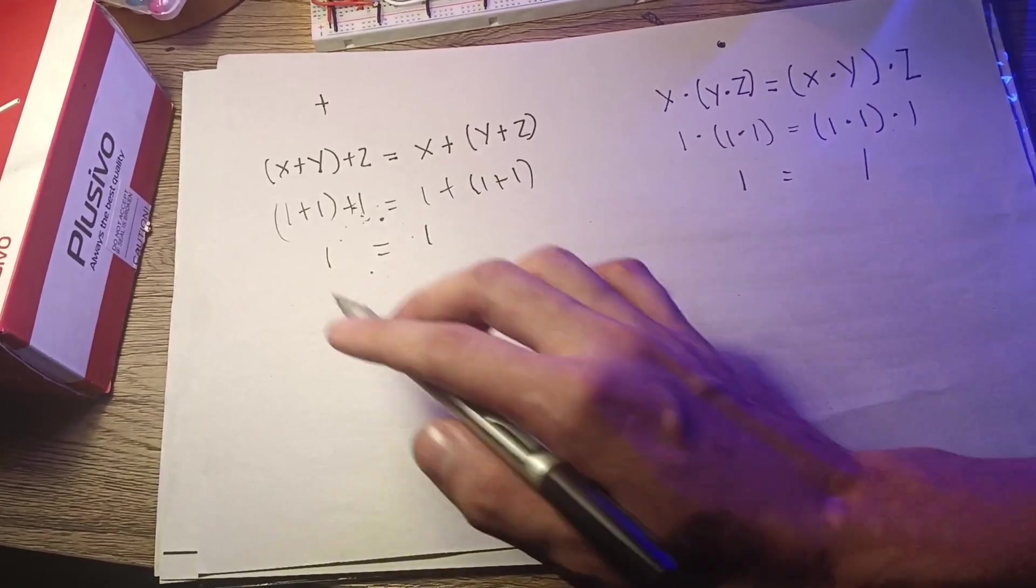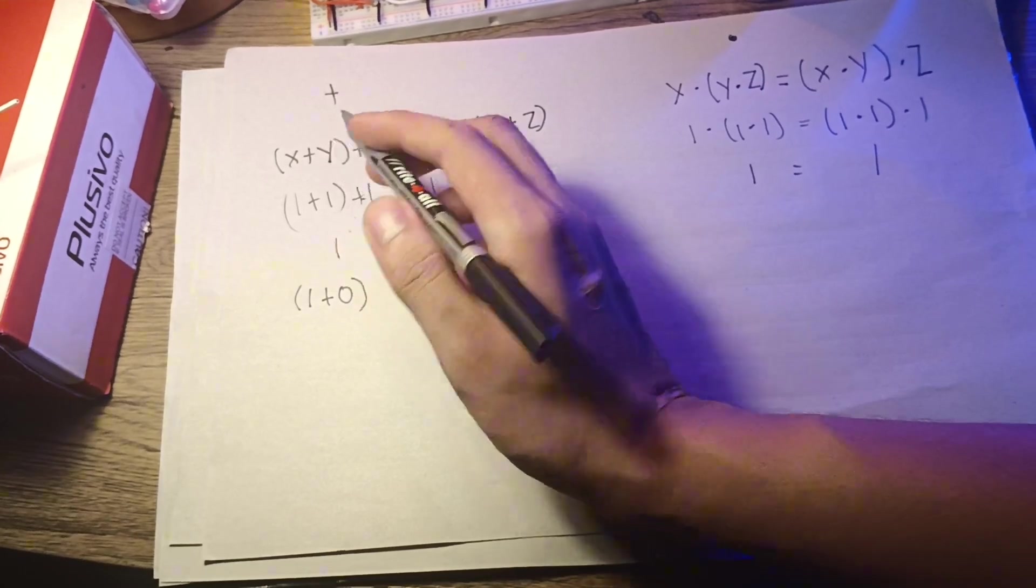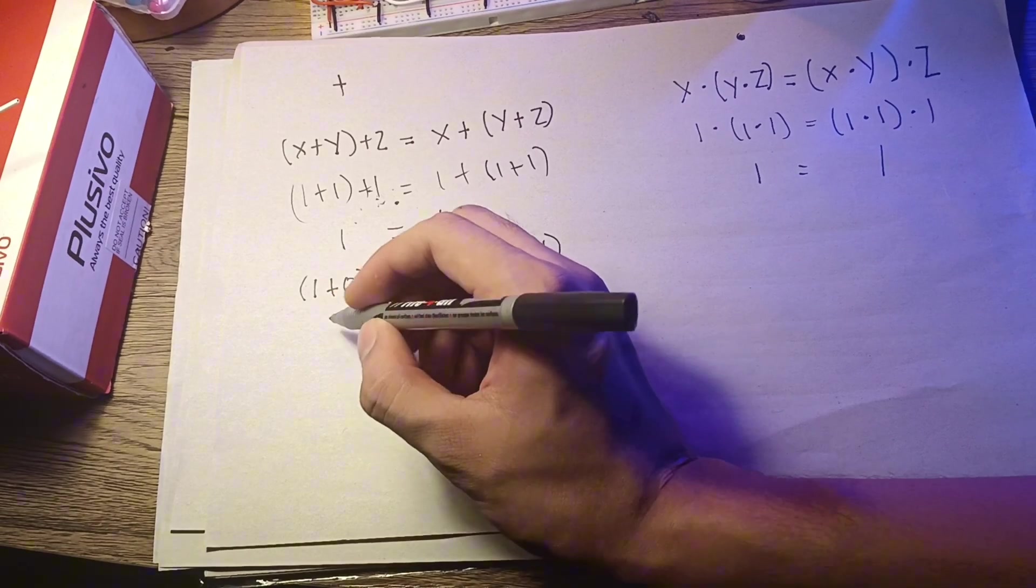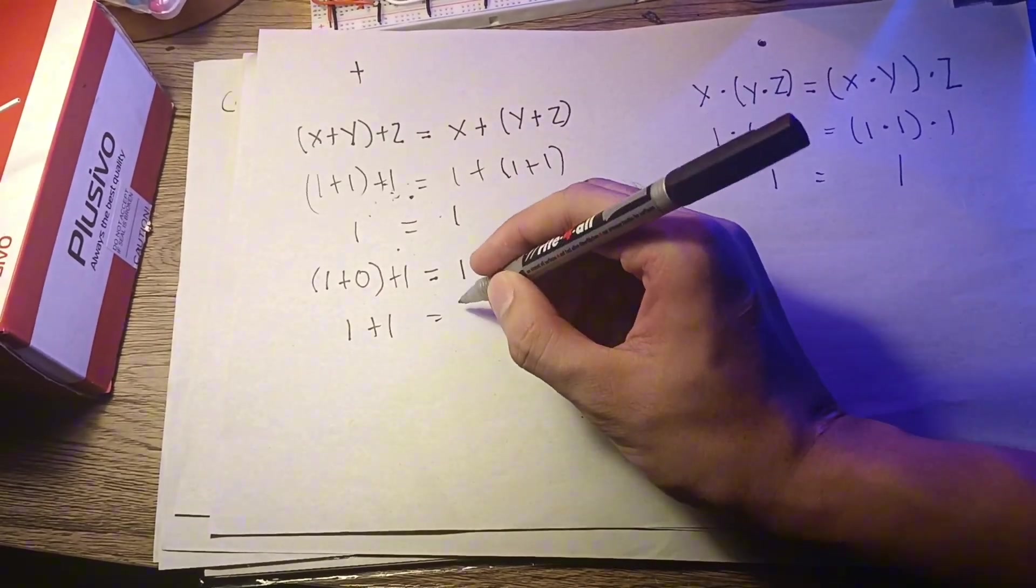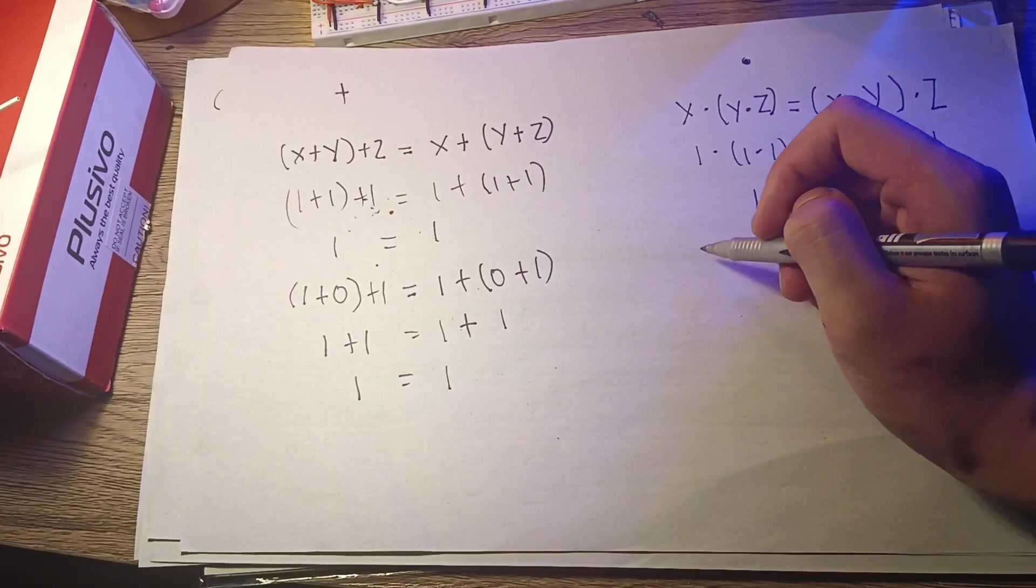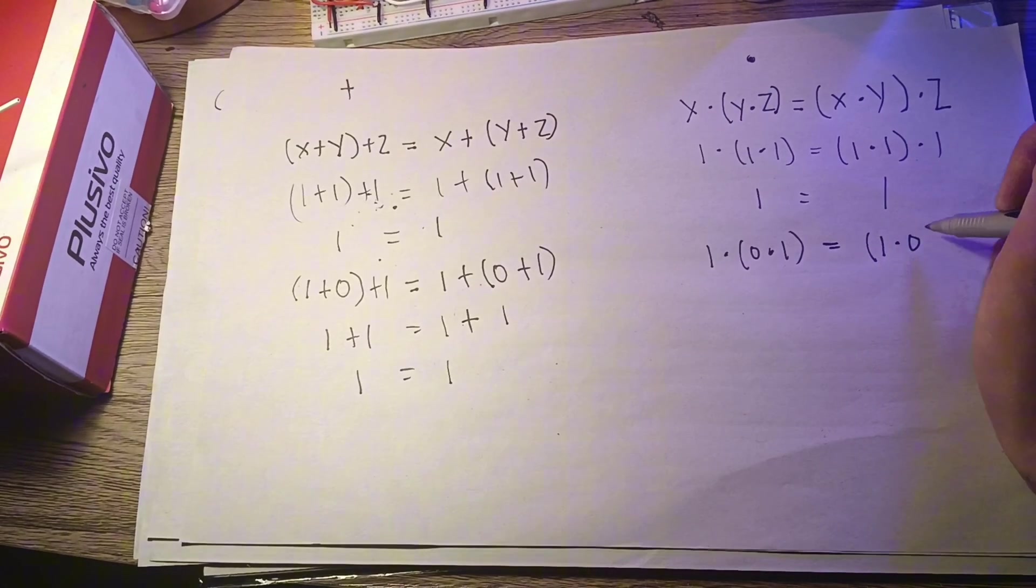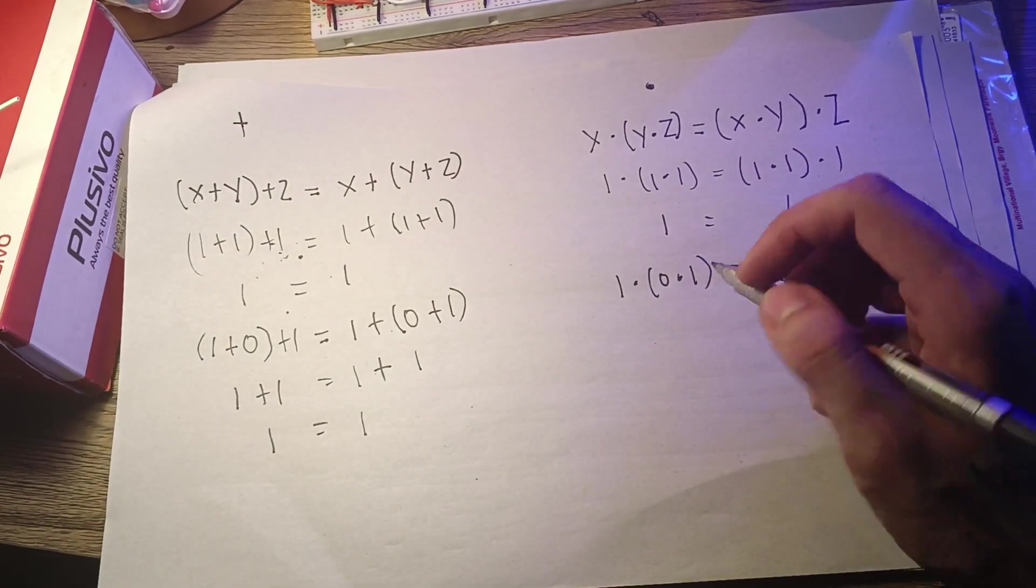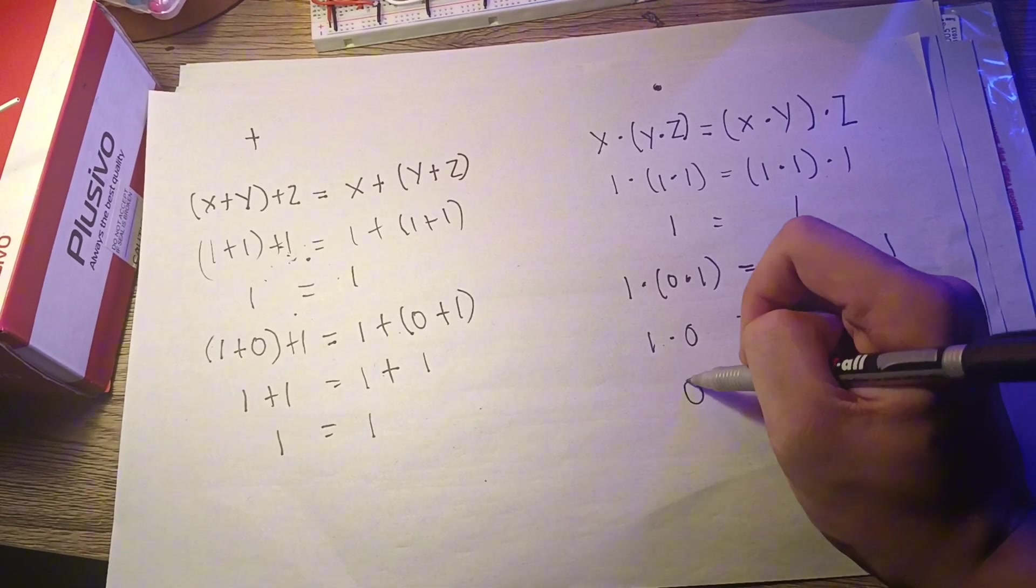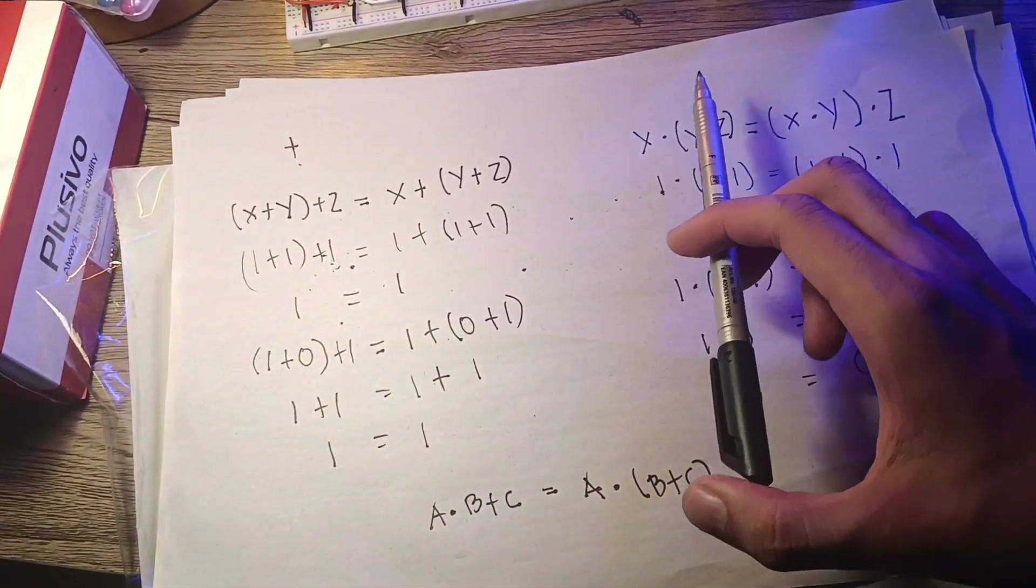But what if y is 0? If y equals 0, then 1 plus 0 plus 1 equals 1 plus 0 plus 1. 1 plus 0 is 1, 1 plus 1 is 1, then 1 plus 1 is 1. But in this, if y is 0, 1 times 0 times 1 equals 1 times 0 times 1. 0 times 1 is 0, 0 times 1 is 0, 1 times 0 is 0, and 0 times 1 is 0.